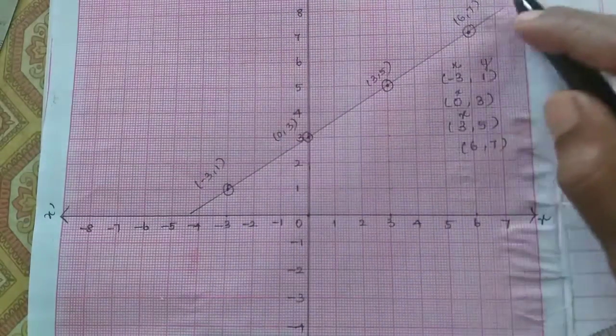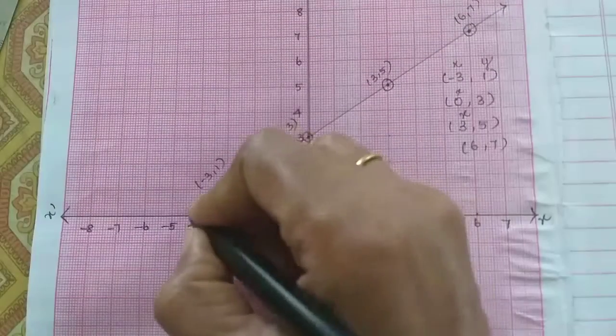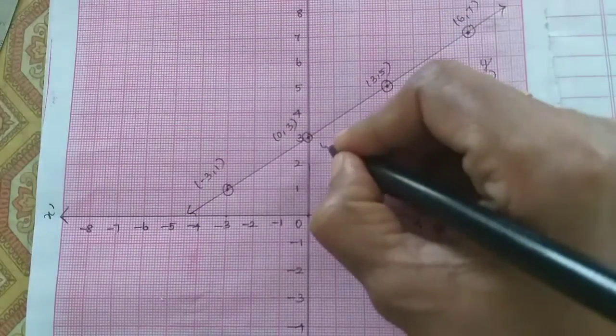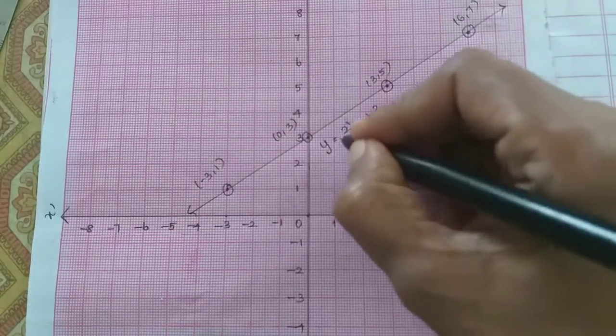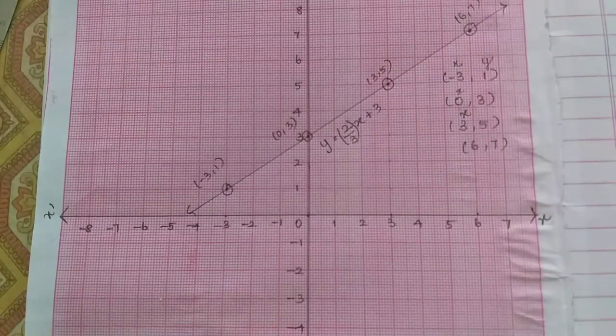The points will go to the line. So here is the equation y equals 2/3 times x plus 3. This is the equation. That's all.